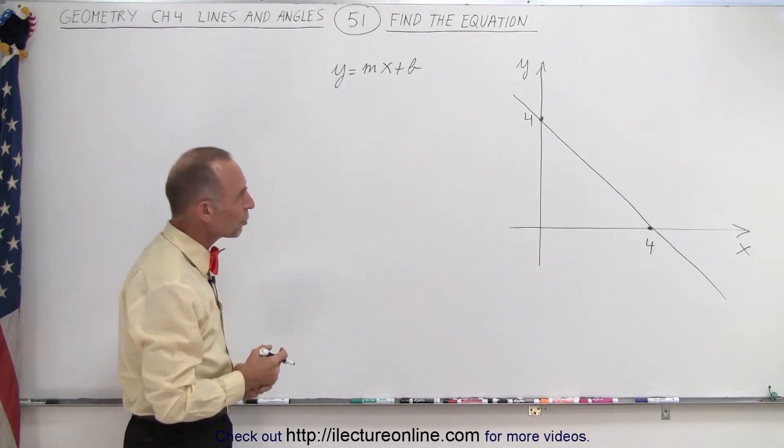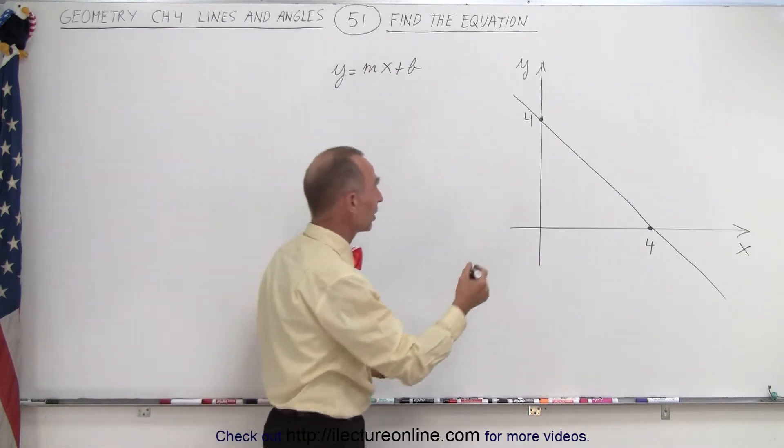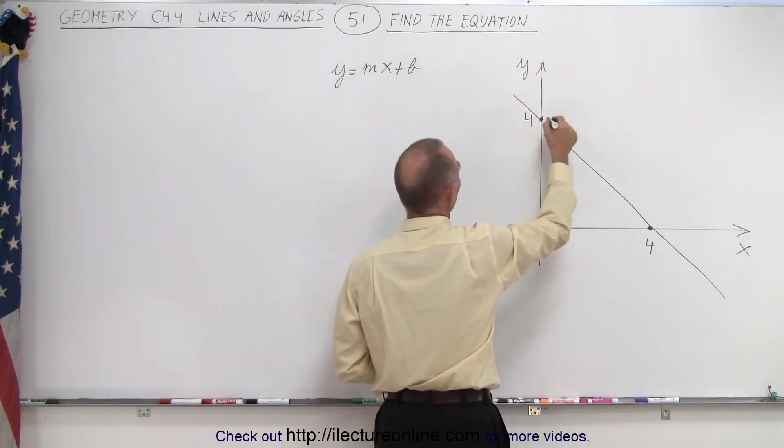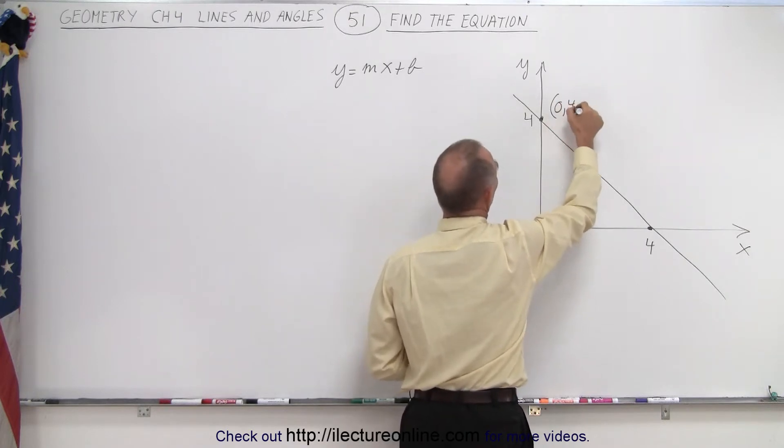So the first thing you want to do is find the y-intercept, and it's clearly seen on here. We see that the line crosses the y-axis when y equals 4. So this is the point 0, 4.